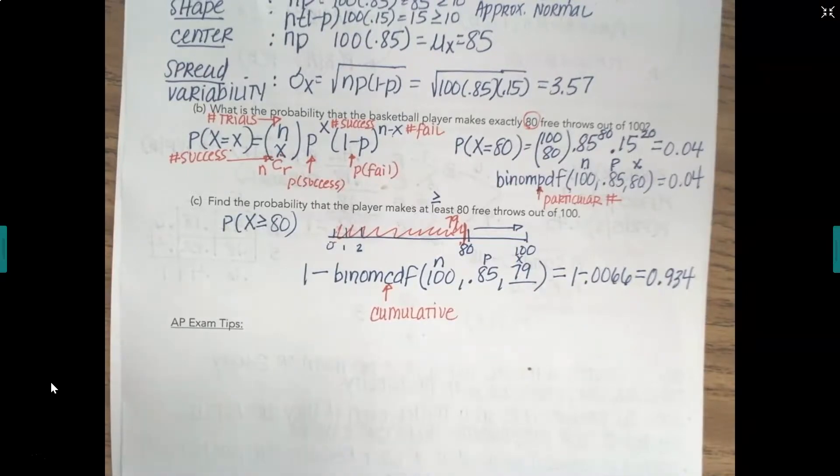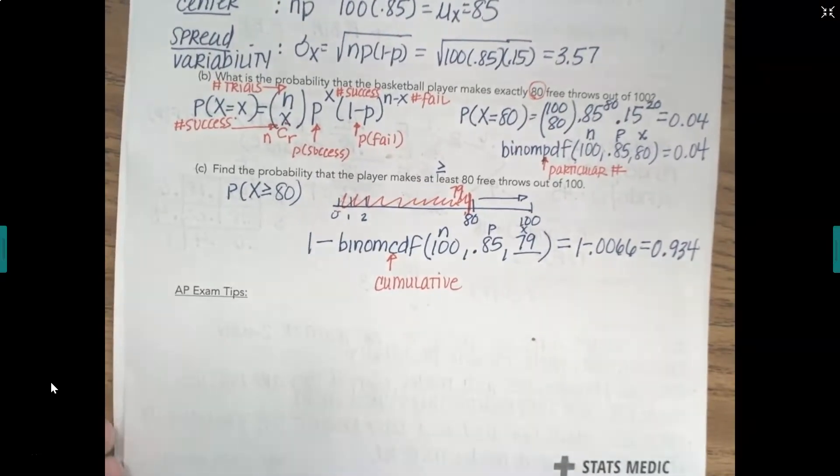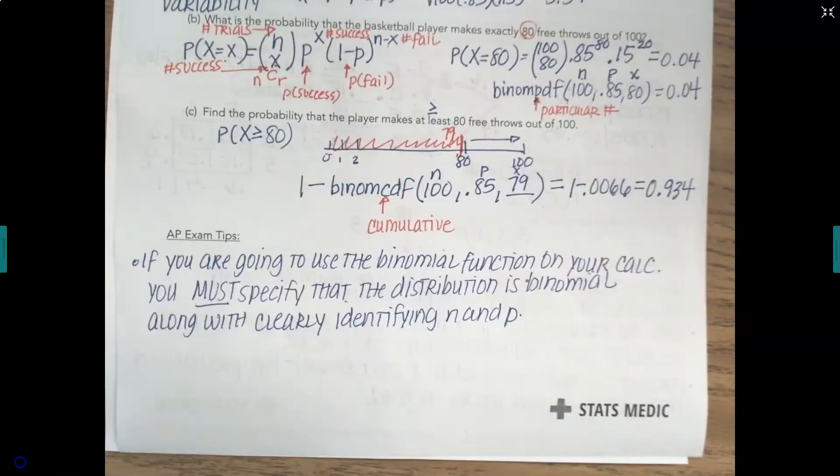So the only AP tip I have for you in this section. If you're going to use the binomial function on your calculator, which is what I recommend to make sure you're getting the correct number, you must specify that the distribution is binomial, and you must also clearly identify N and P.